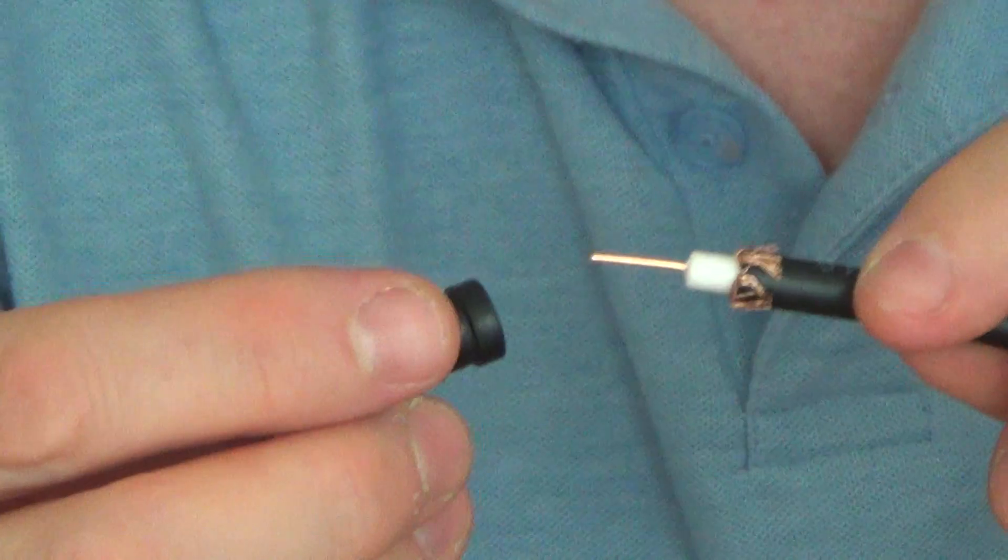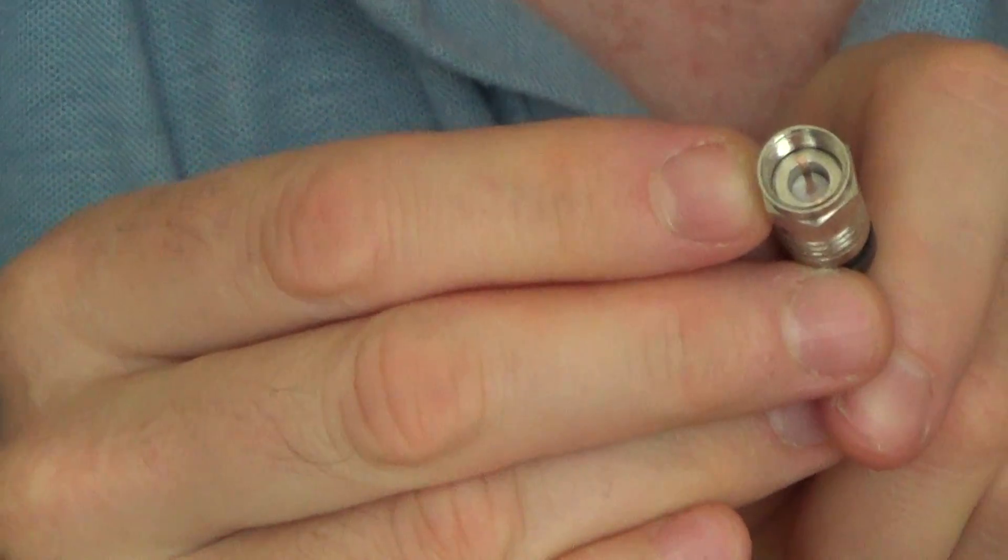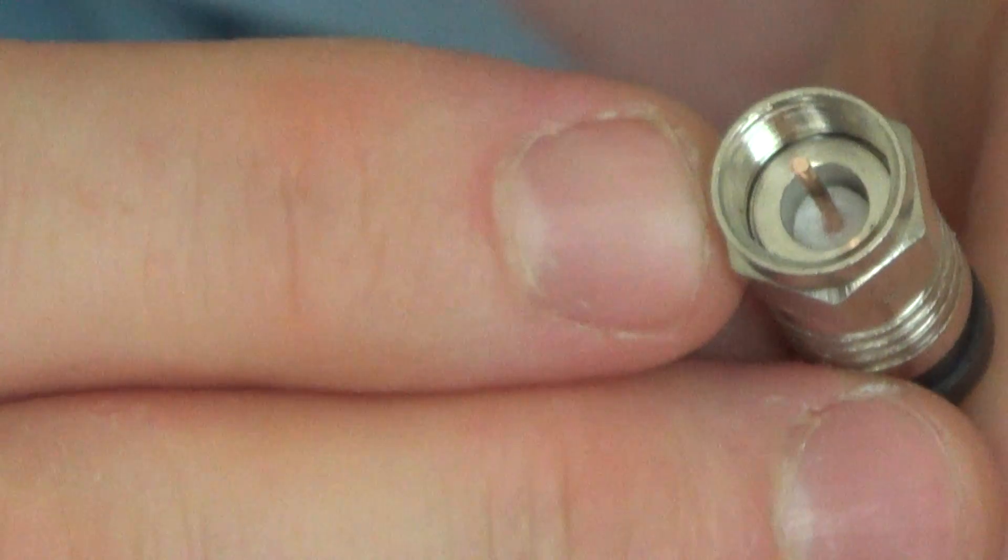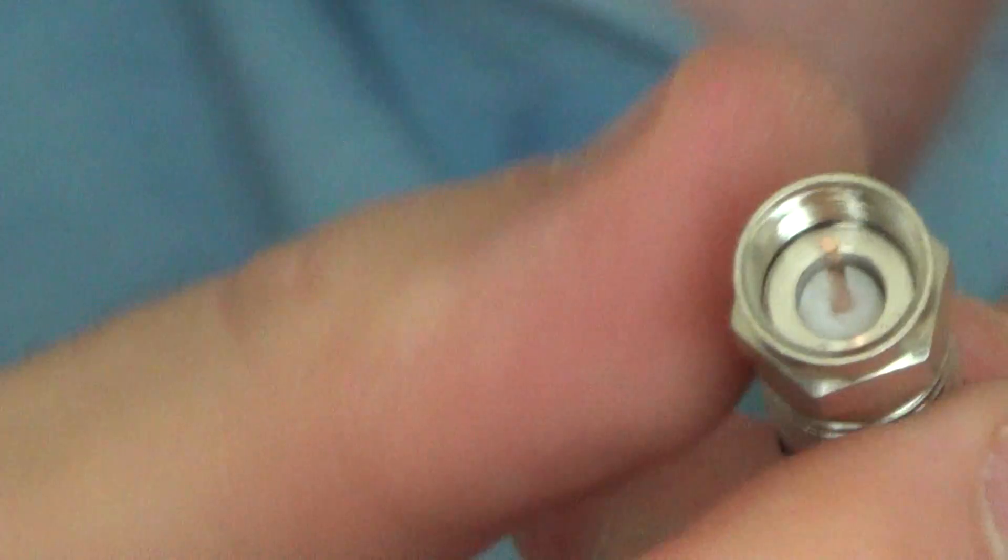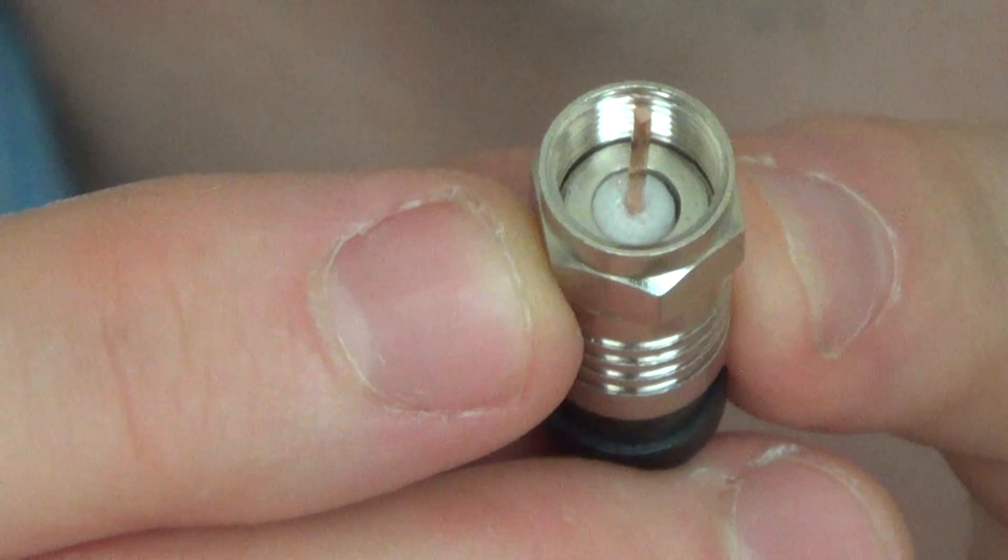So all we have to do is you put it in like that and then you just work it forward and back until, as you can see, the white dielectric is still quite far away from there where it needs to be. So I'm going to keep turning it and turning it and it's getting closer now. Turning it and turning it, just wiggling it back and forth until, there you go, the white dielectric is now level with that shoulder on the inside.